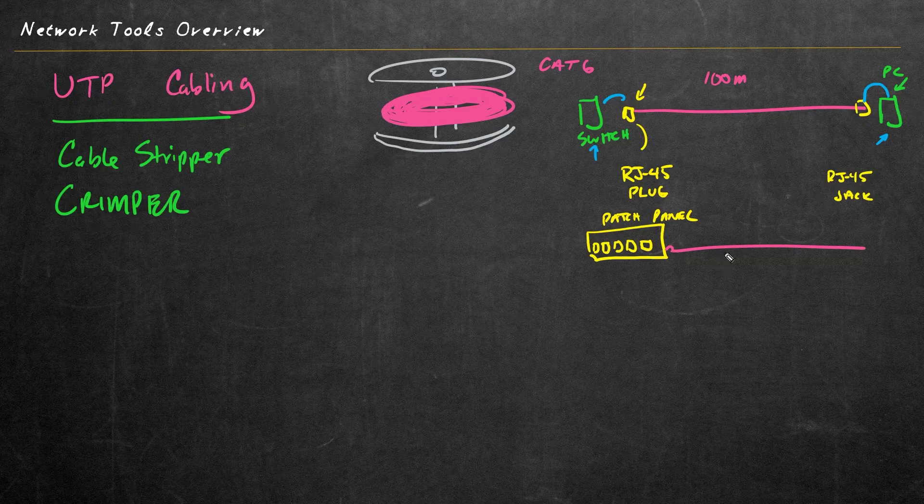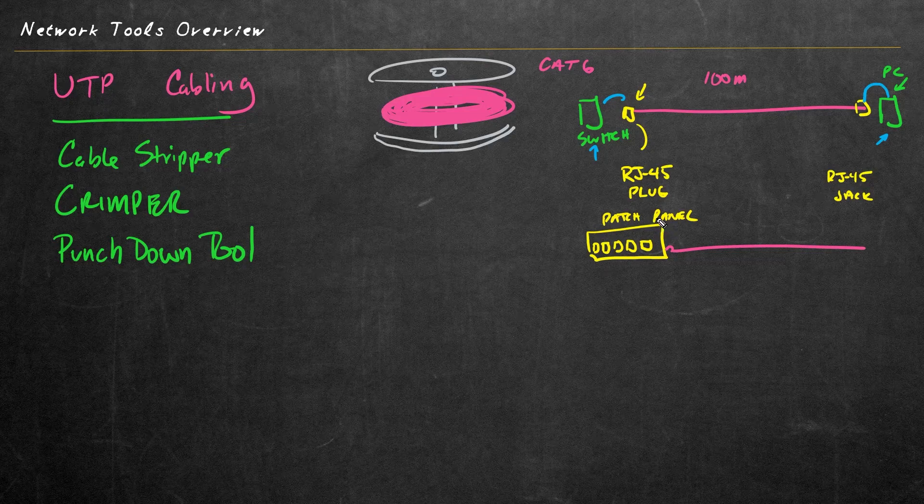And that's true for the patch panel on the back end and also on this little RJ45 jack on the back end. And the tool we're going to use on the back end to do that is called a punch down tool. So they can make the connection on the patch panel and also here on the RJ45 jack.